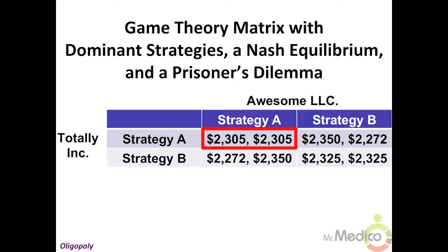A prisoner's dilemma occurs when each firm's respective payouts are greater if each firm does not play its dominant strategy. In the game theory matrix, the dominant strategies for both firms are to play Strategy A, and that outlying cell is the Nash equilibrium. If both firms play Strategy B, then their payouts are greater — $2,325 apiece.